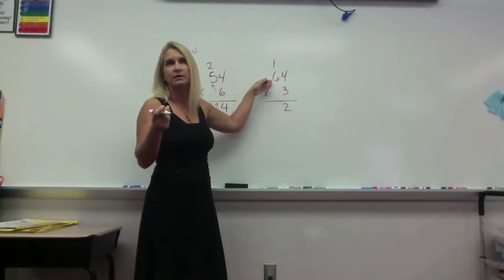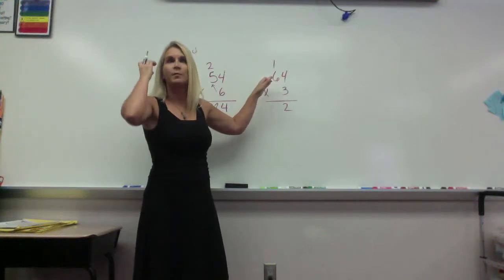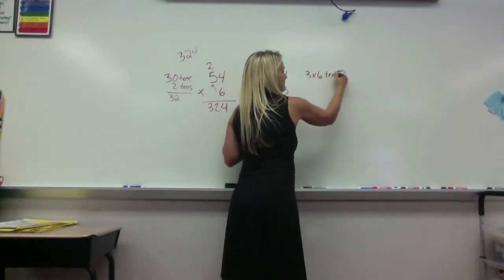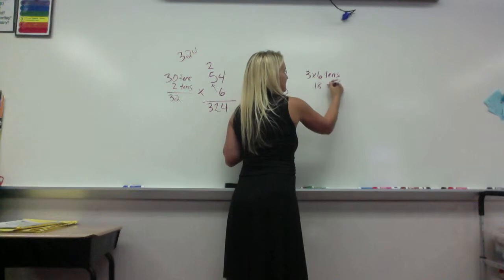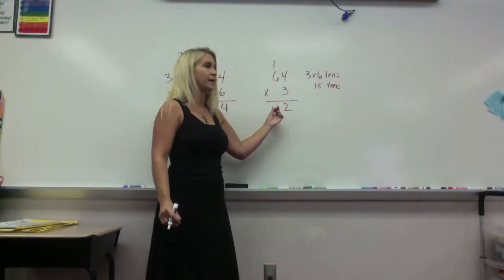Three times six is? Two hundred and ten. Just three times six? Eighteen. Eighteen. Remember because in our head we're doing three times six tens. So then I get eighteen tens. And that reminds me that my eighteen is going to go in the tens place.